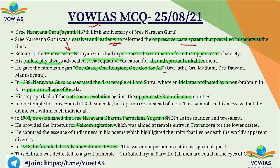In 1888, Narayan Guru consecrated the first temple of Lord Shiva where an idol was ordained by a non-Brahmin in his village in Kerala. Also remember the Vaikam Satyagraha, which is a temple entry movement associated with Acharya Narayan Guru — this might be a question tomorrow. In 1903, he established Sri Narayan Dharma Paripara Yogam, and in 1913 he founded the Advaita Ashram at Aloha. These are the important things to remember from the examination point of view.